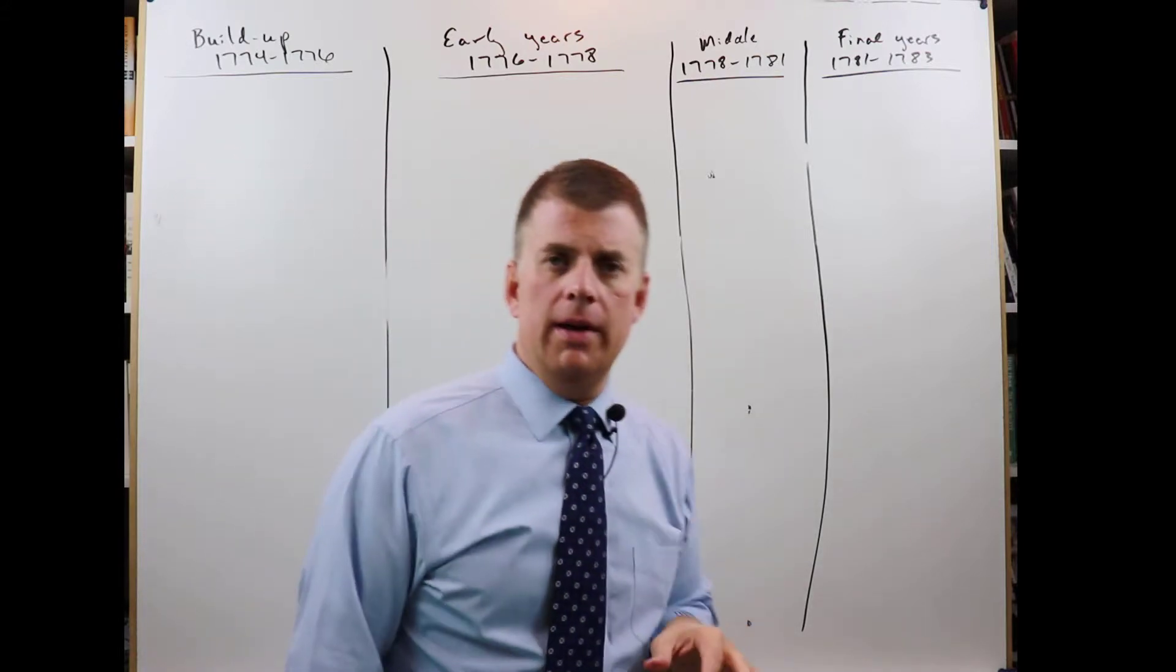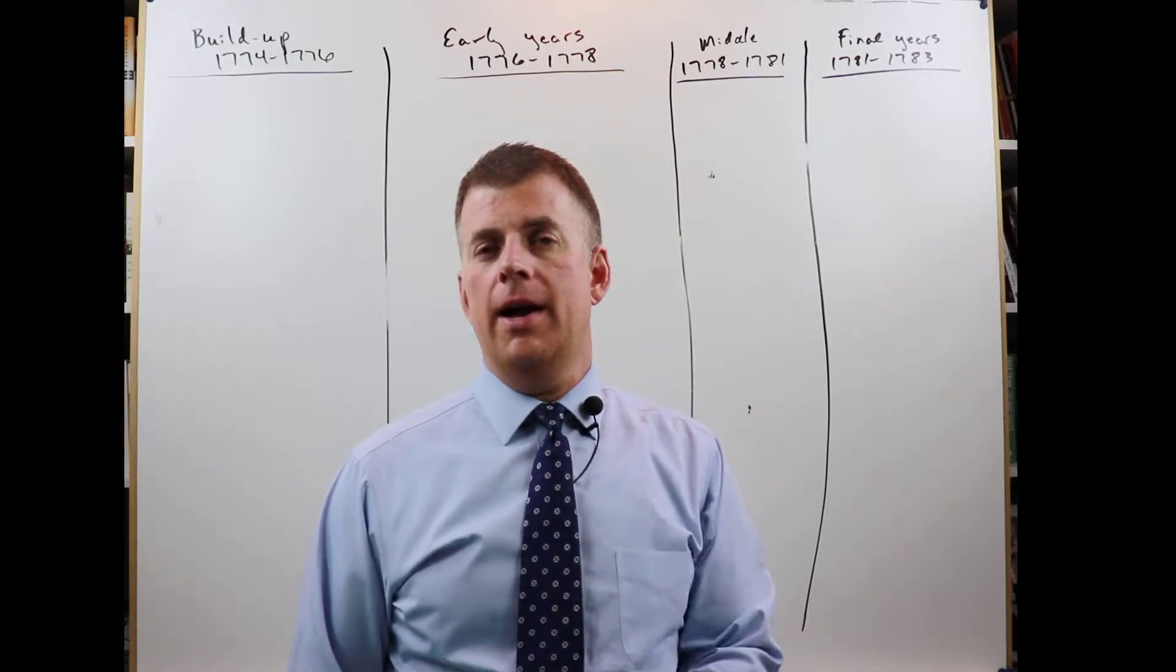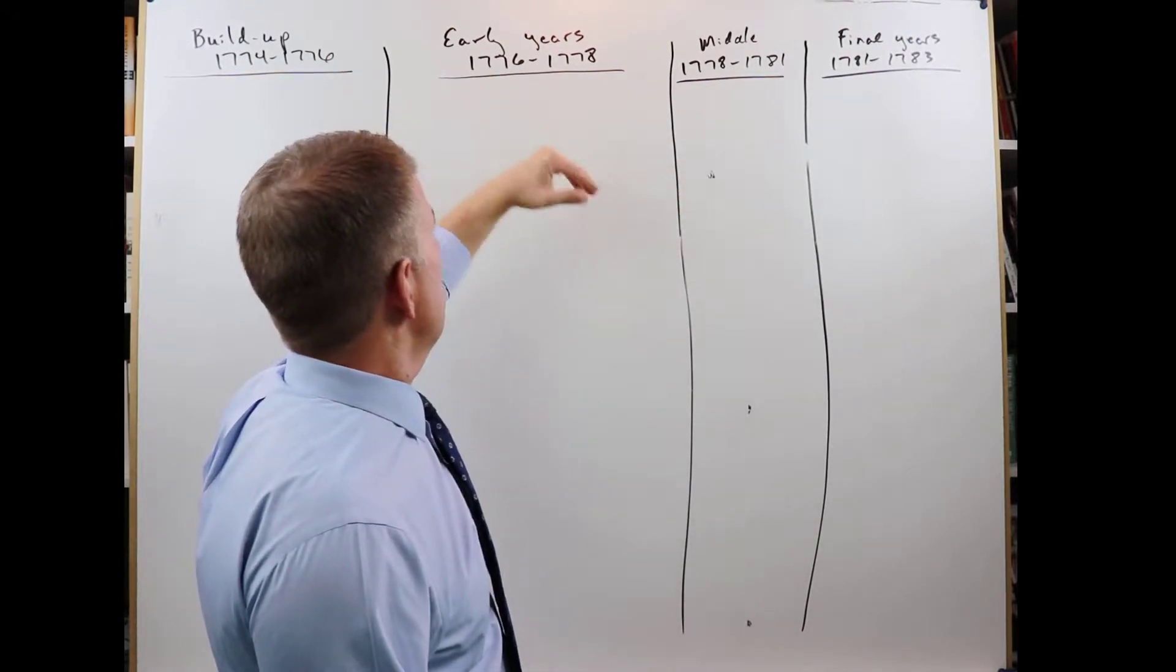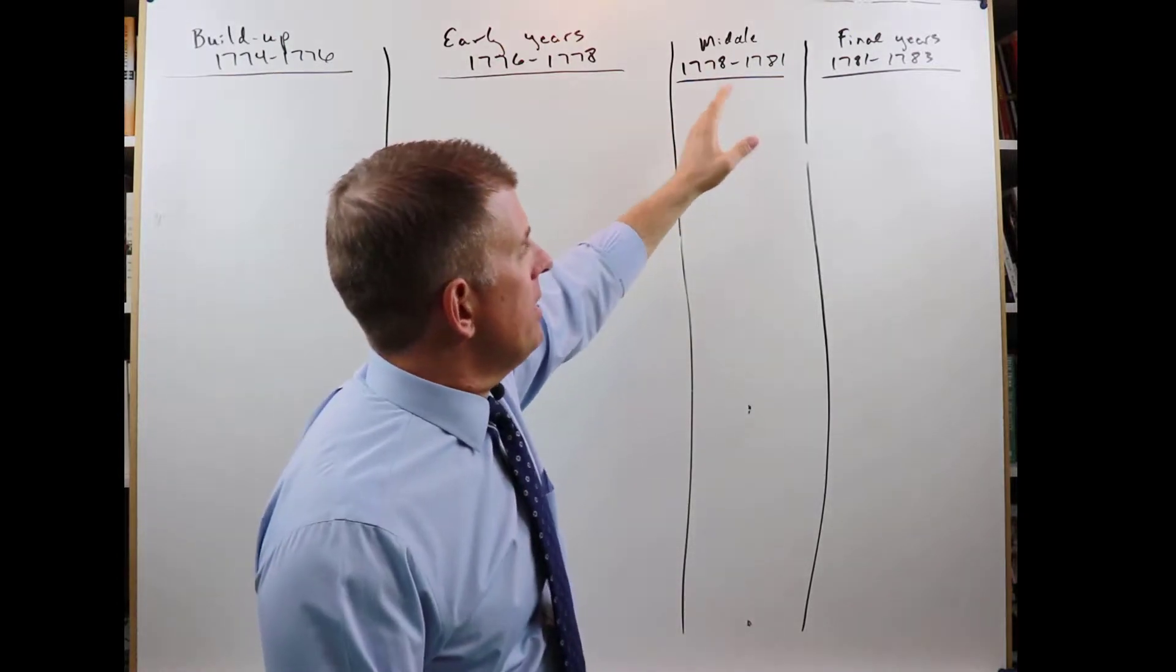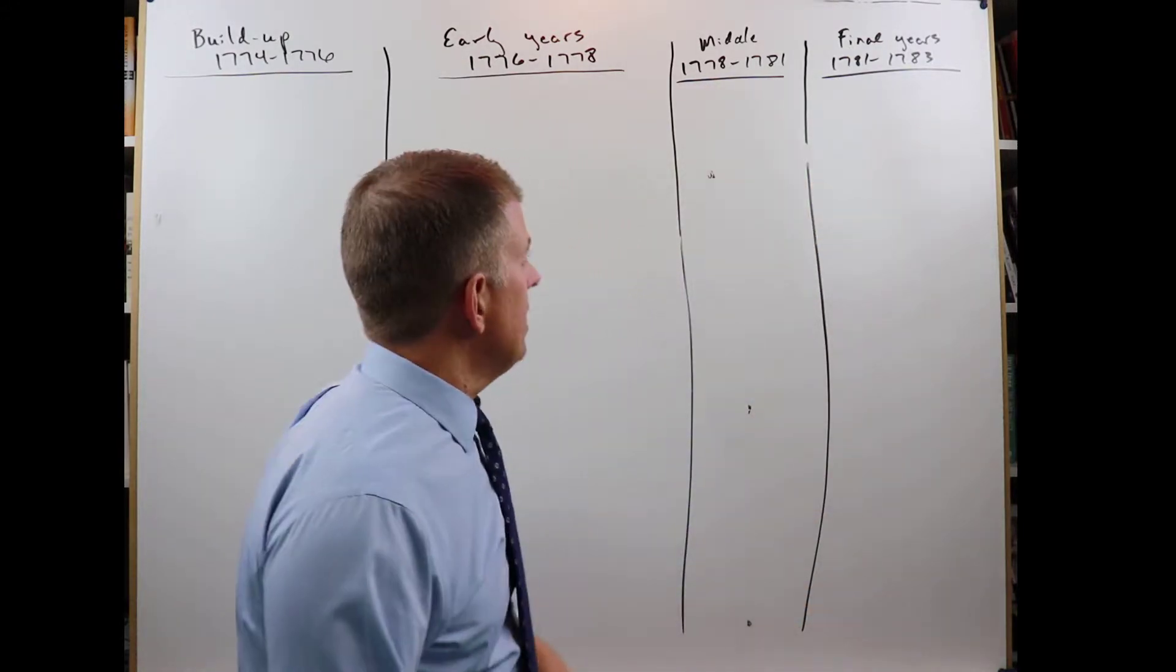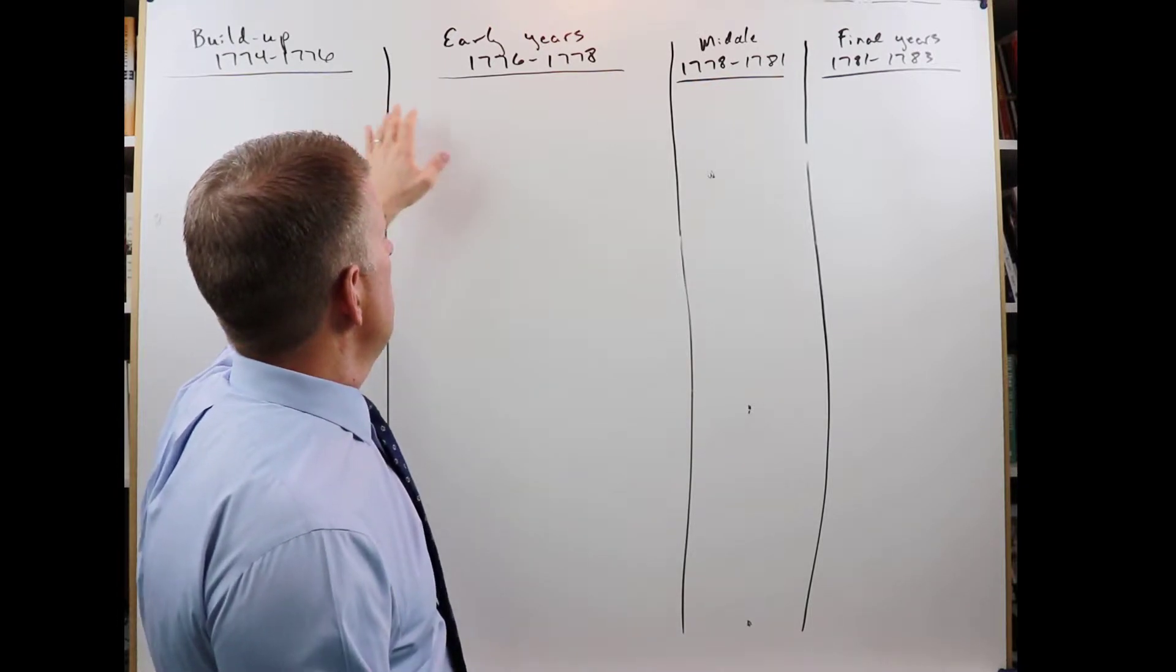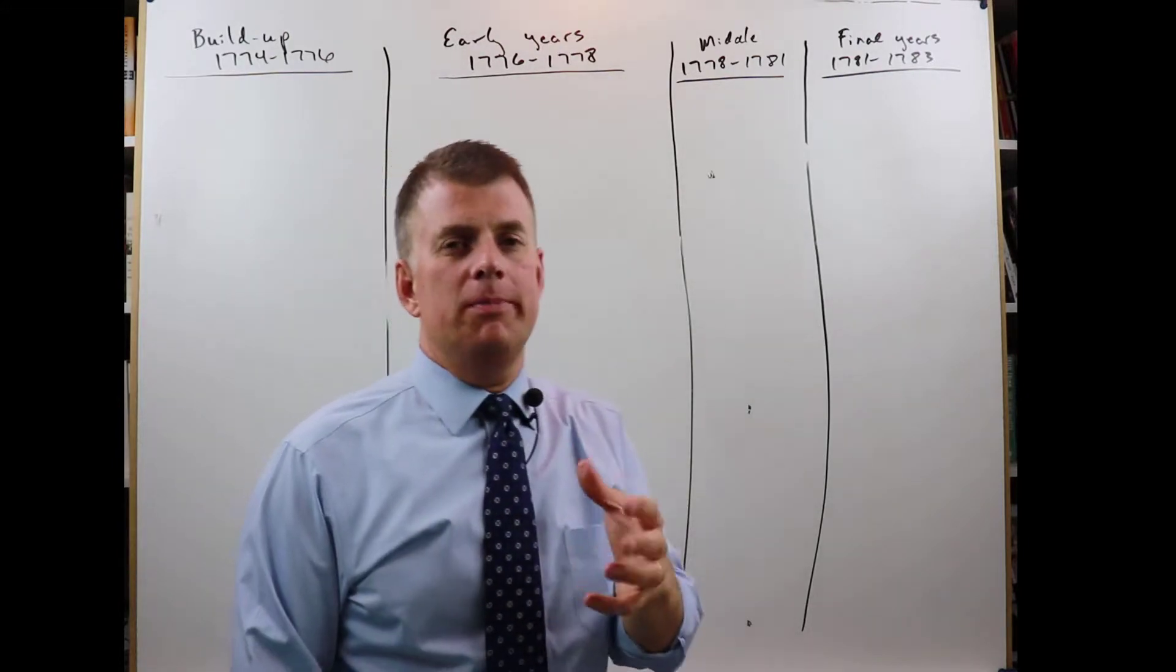Most of the things that you're going to want to know if you get asked on a test, here and here. We have the buildup, 1774, 1776. Early, 1776, 1778. The middle, 1778 to 1781. And then the last couple years, 1781 to 1783. Most of the things that you're going to get asked are going to be here in the beginning, the buildup and the early years. I say buildup because it's buildup to the Declaration.